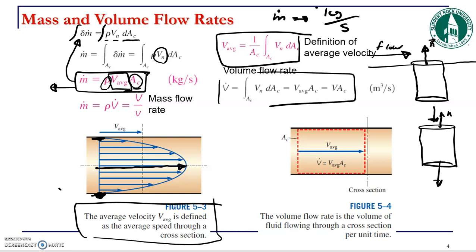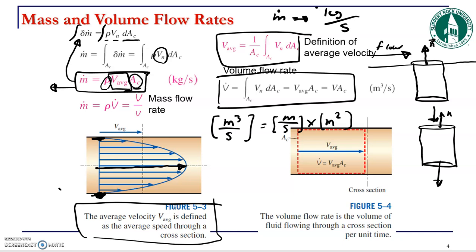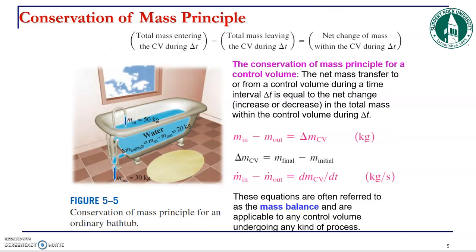The volume flow rate is defined by the integral of V_N dA_c, so the volumetric flow rate in cubic meters per second equals average velocity multiplied by cross-sectional area. Therefore, V-dot equals velocity times cross-sectional area, and the mass flow rate can be written as density times average velocity times cross-sectional area, or equivalently as density times volumetric flow rate. These are the two important equations.